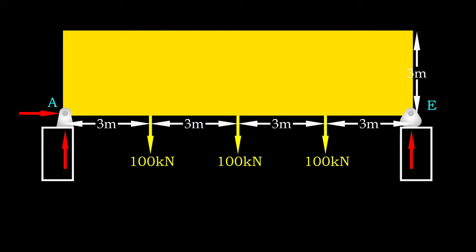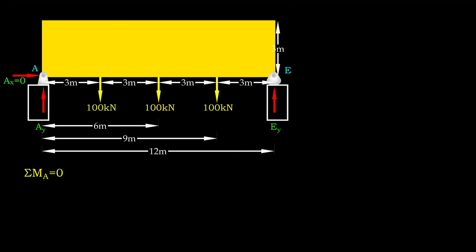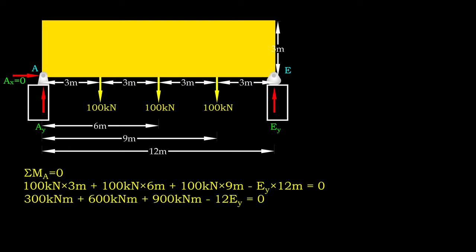The horizontal reaction at joint A is zero since we do not have any horizontal load. Now, we left 2 unknown vertical reactions at joint A and E. Let's solve for EY by taking moment about joint A. The structure isn't rotating about joint A after loaded, which means the moment created by loadings are cancelled out by stabilizing moment created by reaction EY.